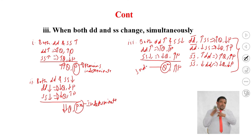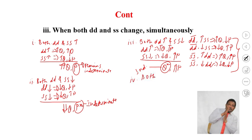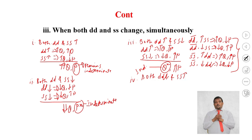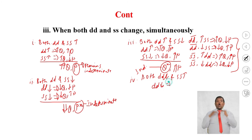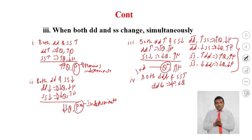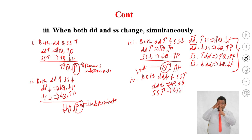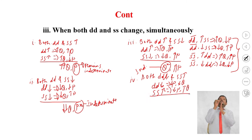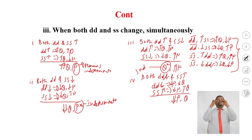Finally, when demand declines and supply increases simultaneously, both changes push the equilibrium price downward, so the equilibrium price will decline. However, demand declining reduces equilibrium quantity while supply increasing raises it, so the equilibrium quantity remains indeterminate.